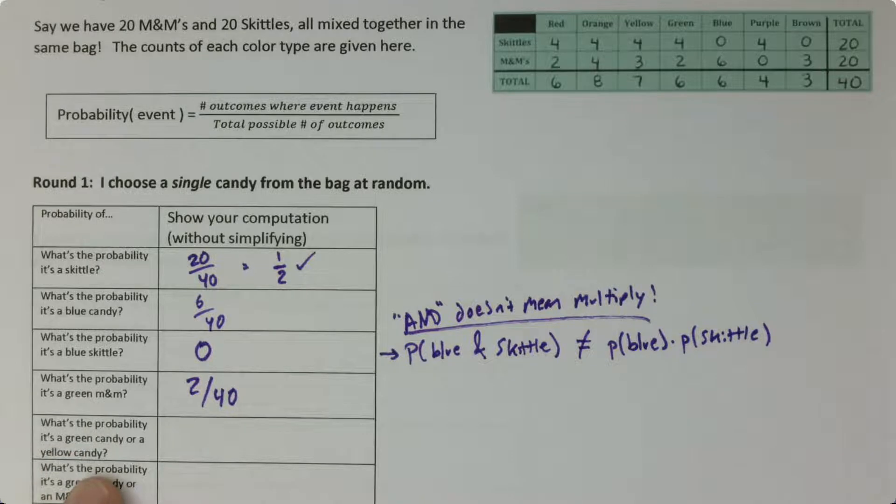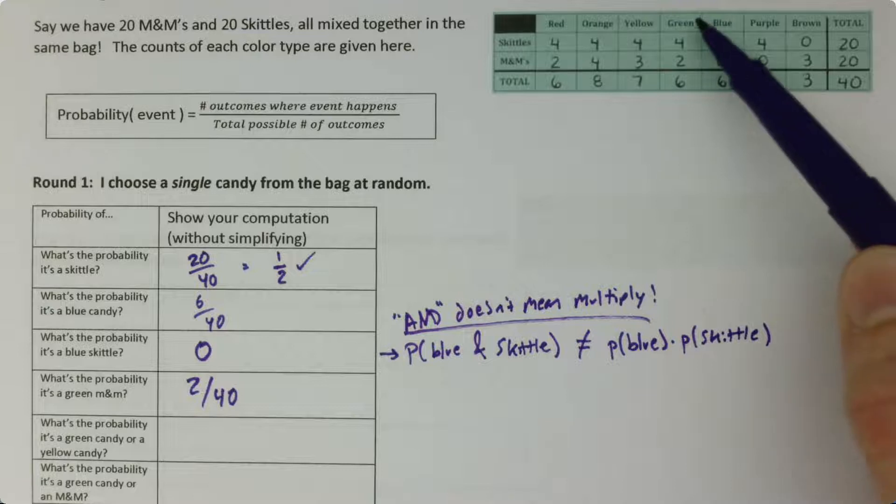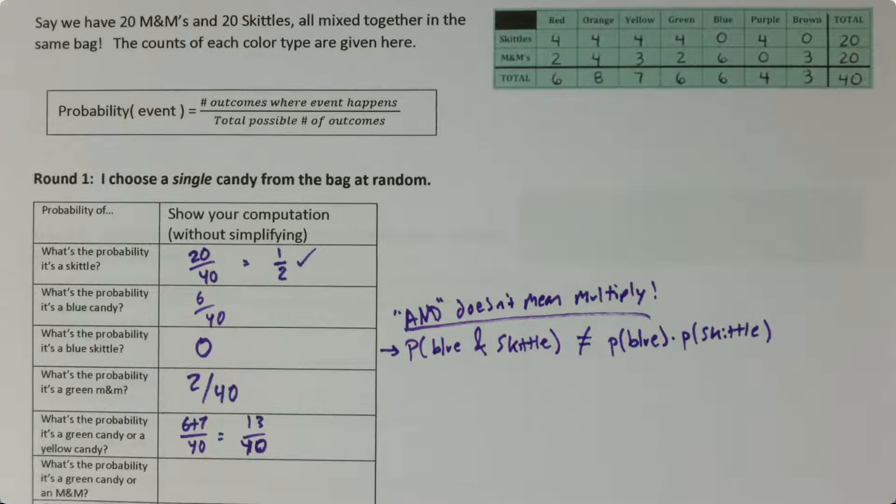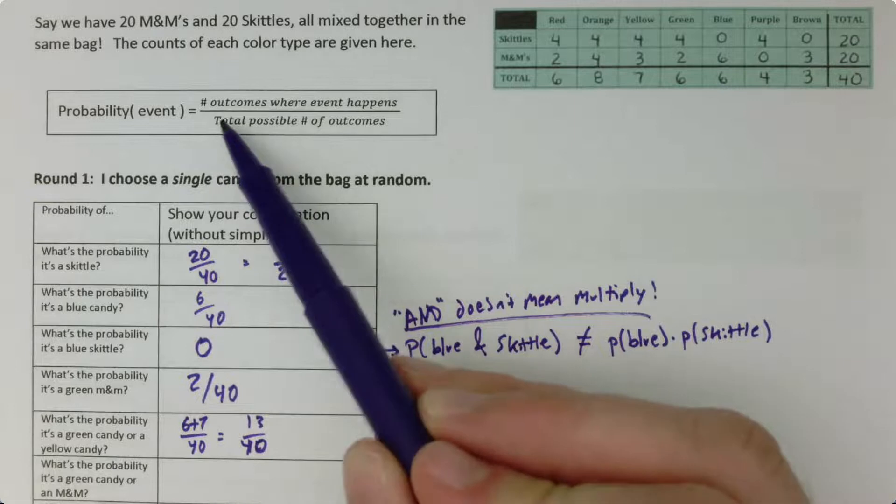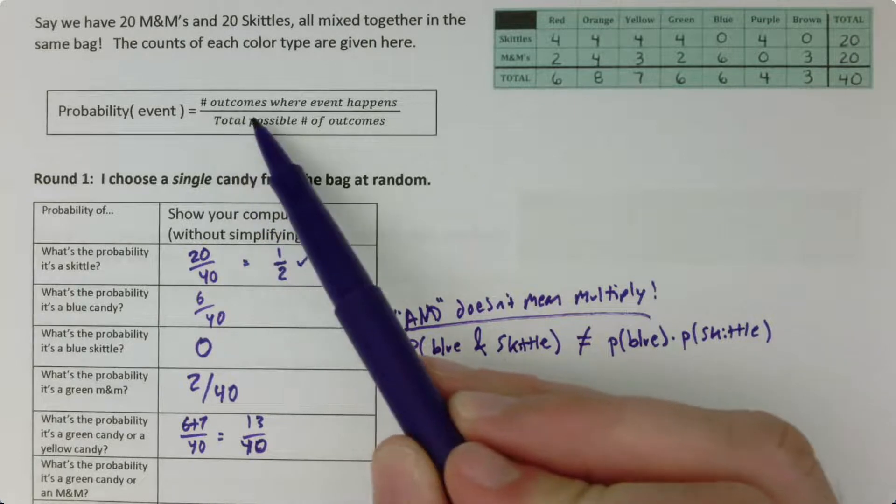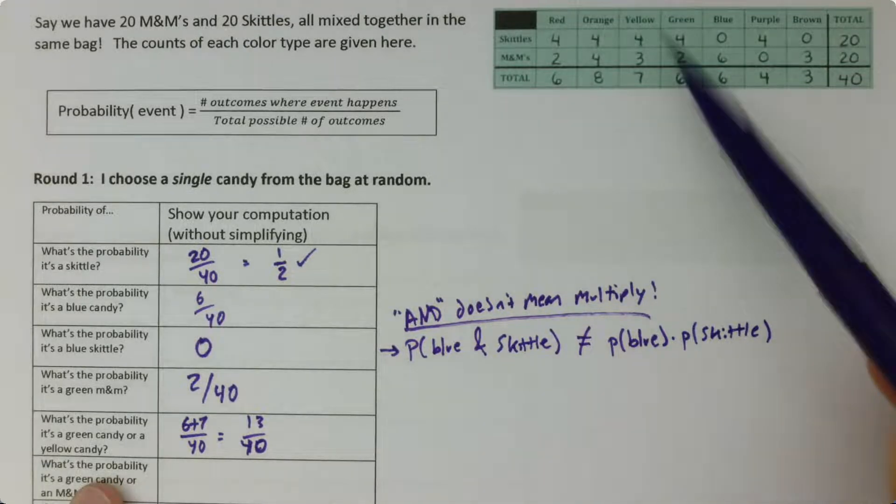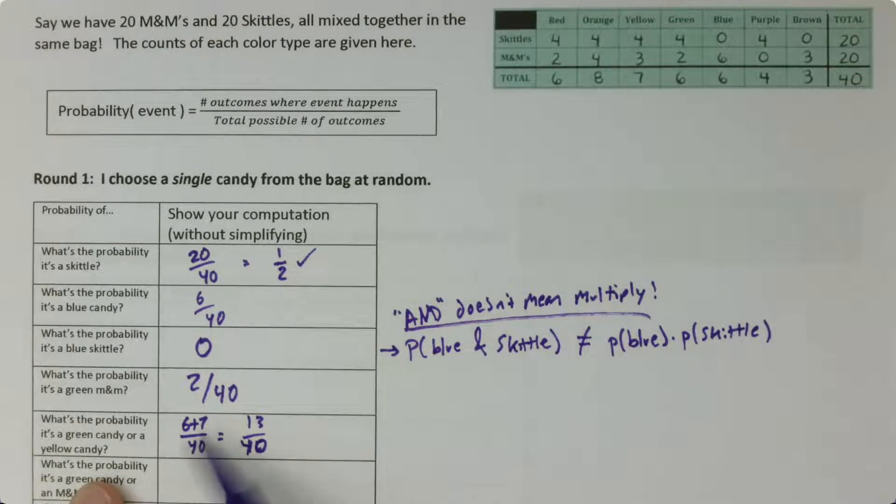Okay, so that's AND. Let's look at OR in the next two problems. So what's the probability it's a green candy or a yellow candy? So in this case we can add up all the candies that are green, 6, and all the candies that are yellow, 7. So why did I add things up here? It's just the same equation. I want to know how many possible candies are either yellow or green. And so since there are 6 green and 7 yellow, there are 13 total that satisfy the description of the event I want to know the probability of. So 13 over 40.